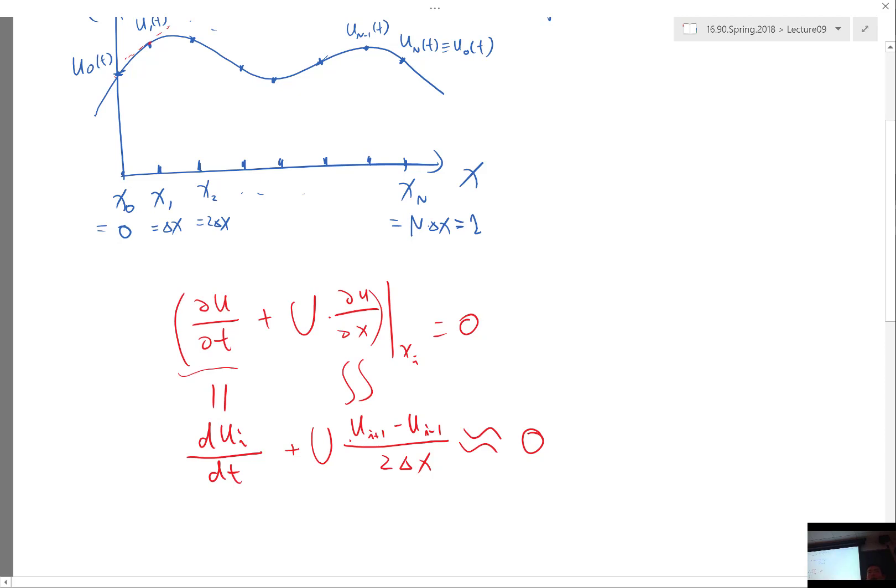We still need one more equation, right, because we have n unknowns. How do we deal with the last equation? Just use forward difference. Where?